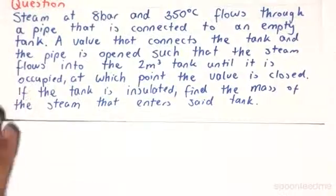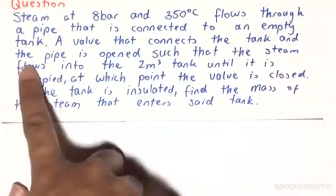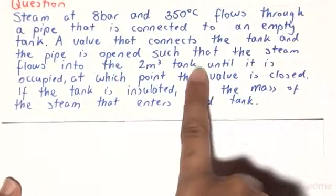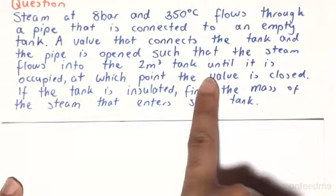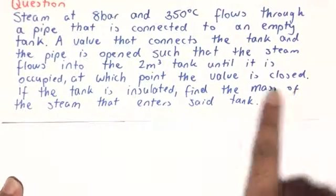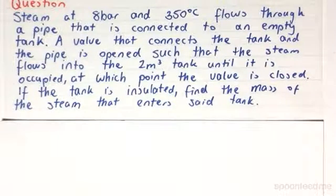Steam at 8 bar and 350 degrees Celsius flows through a pipe that is connected to an empty tank. A valve that connects the tank and the pipe is opened such that the steam flows into the 2 meter cube tank until it is occupied, at which point the valve is closed. If the tank is insulated, find the mass of the steam that enters the tank.